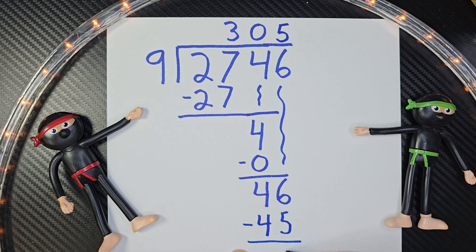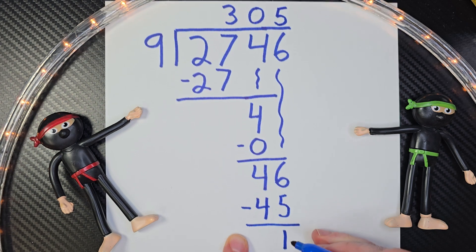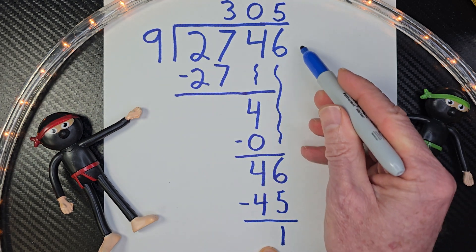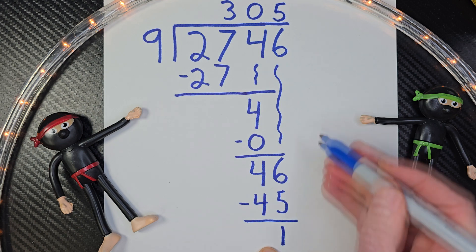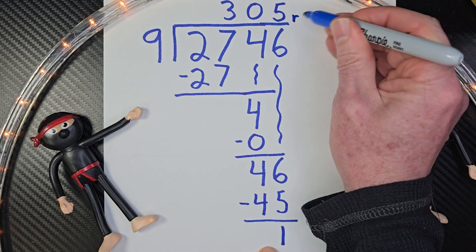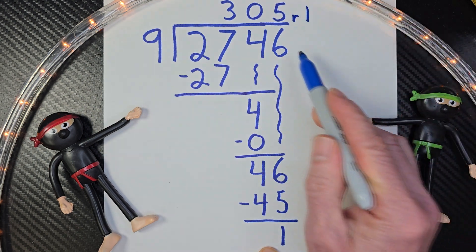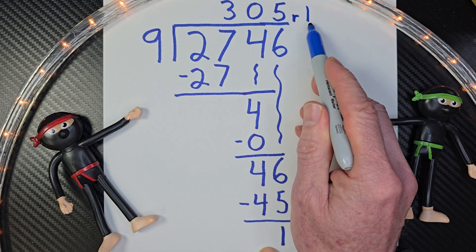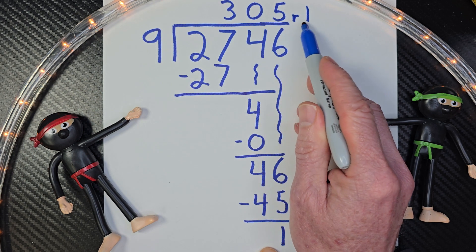Subtract, and that leaves me 1. And that would be my remainder, because there's no more numbers to drop down. So I put a small r right here with a 1. So the answer would be 305 remainder 1.